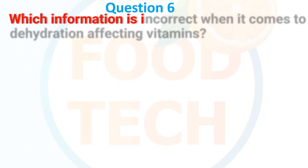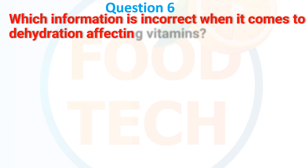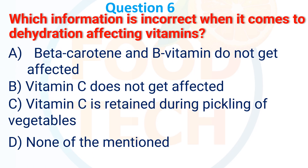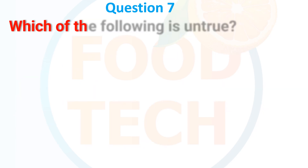Question 6. Which information is incorrect when it comes to dehydration affecting vitamins? A. Beta-carotene and vitamins do not get affected. B. Vitamin C does not get affected. C. Vitamin C is retained during pickling from vegetables. D. None of the mentioned. The answer is B: Vitamin C does not get affected.